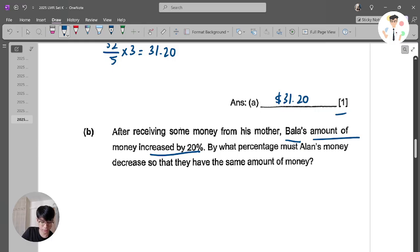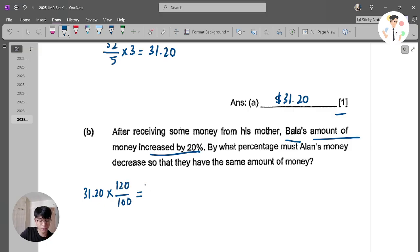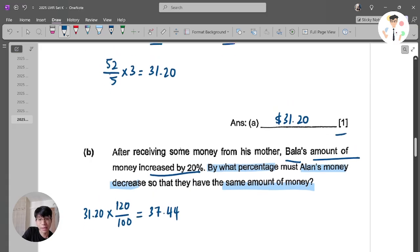After receiving some money from his mother, Bala's amount of money increased by 20%. So this is Bala's amount, $31.20, increased by 20%. So what is the final amount? So $31.20 times increased by 20%, which means that now the percentage is 120%. So times 120 divided by 100 means that now Bala actually have $37.44.